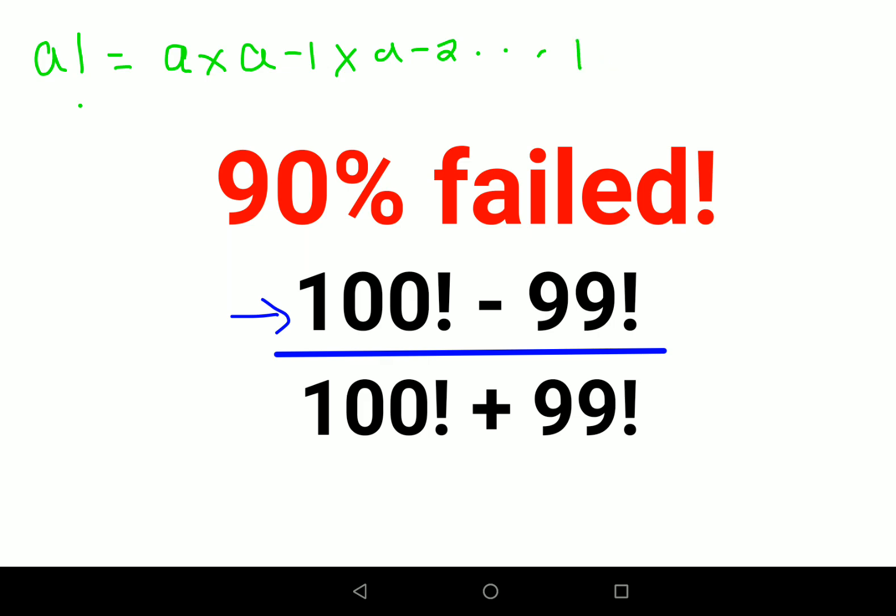Let's take an example. If you had to find 5 factorial, that would be 5 × 4 × 3 × 2 × 1. And if you wanted to find 4 factorial, that would be 4 × 3 × 2 × 1.